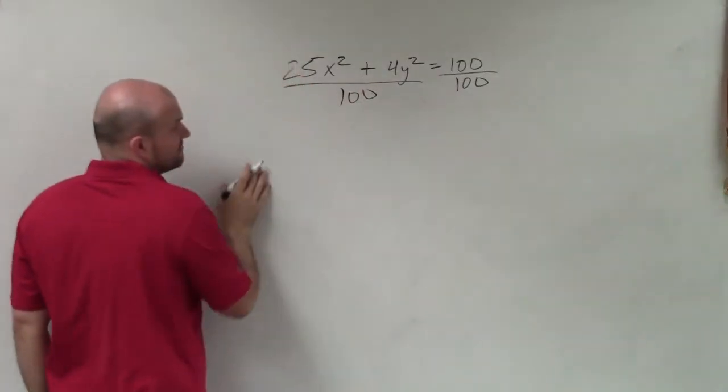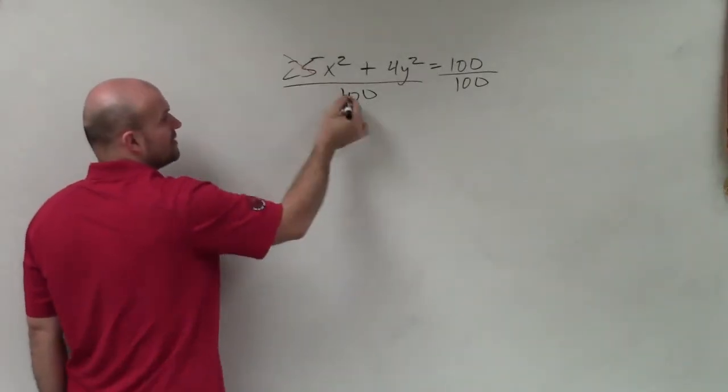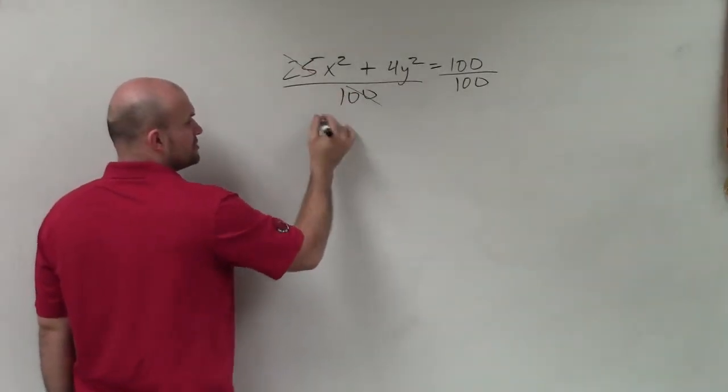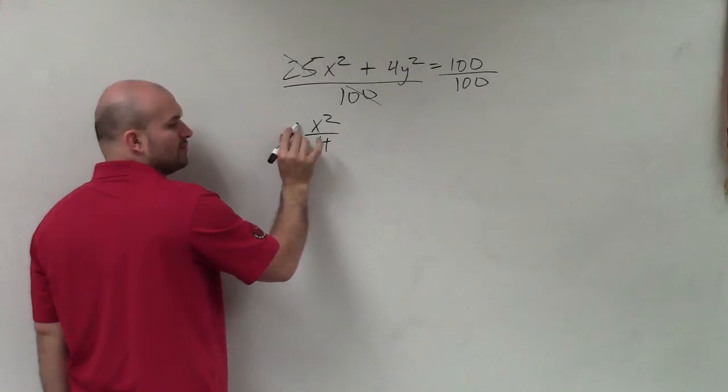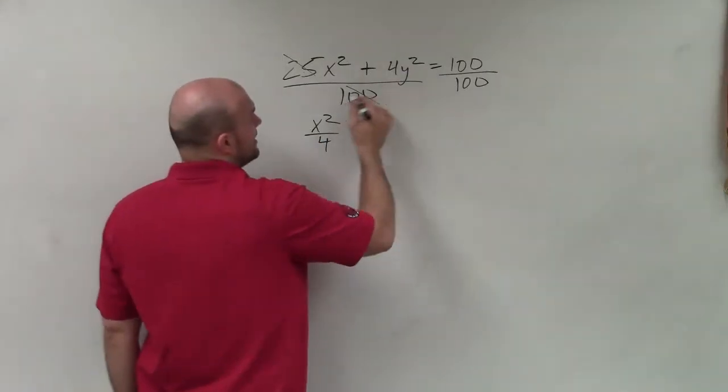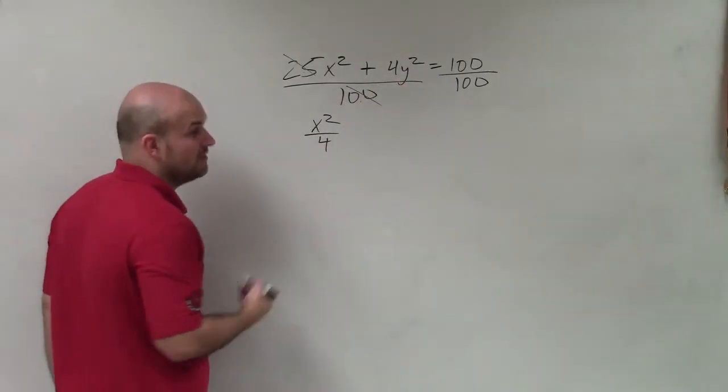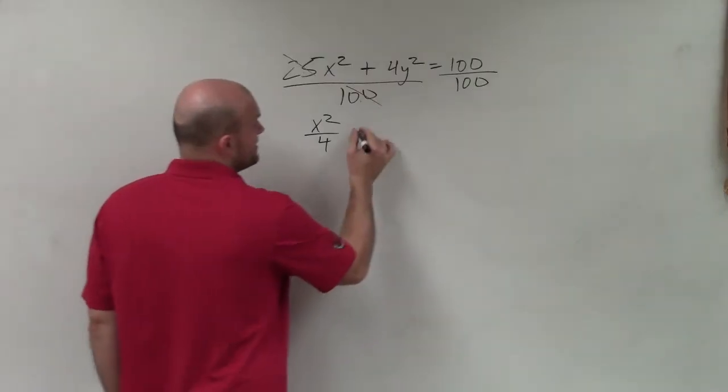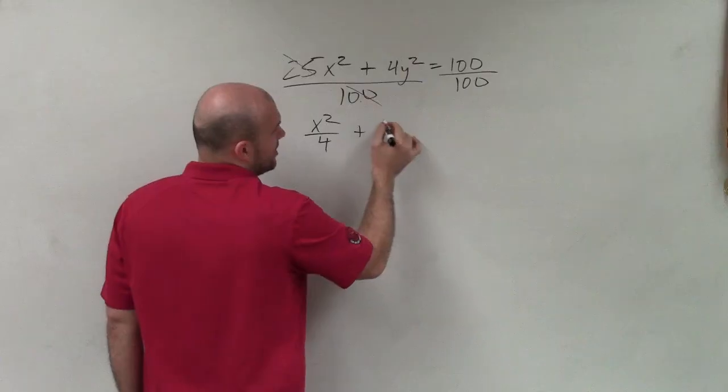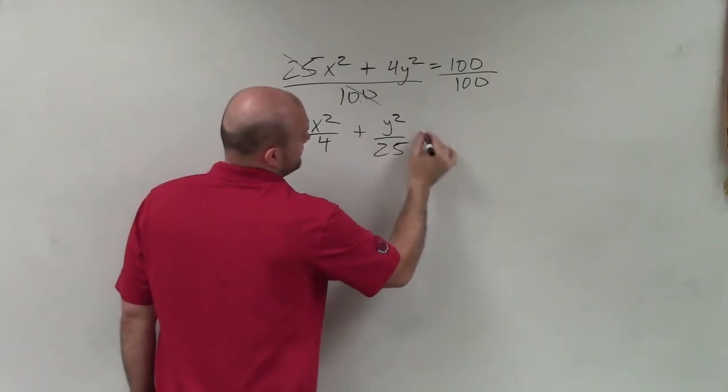Now, this 100 is going to divide into both of these. Here, I can reduce this down to 1 fourth, which would just be x squared over 4. You can put the 1 there, but we don't have to. Here, divide the 100 into 4. That's going to reduce down to 1 25th. Again, you can write the 1 up here, but we don't have to.